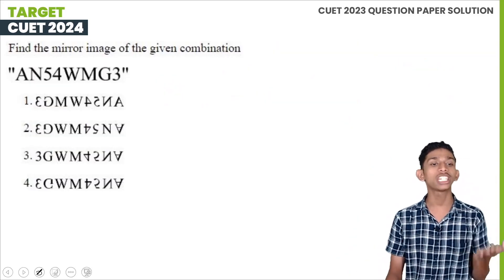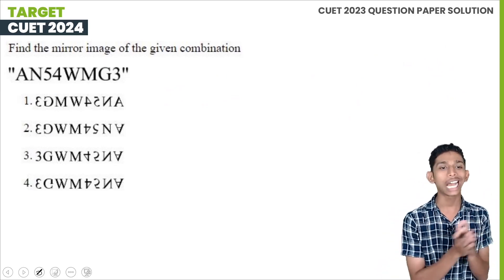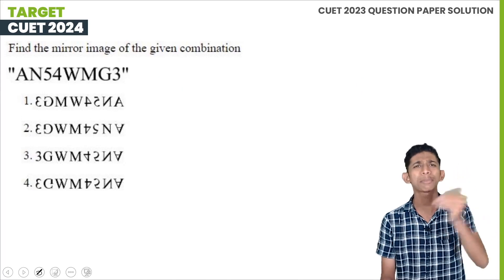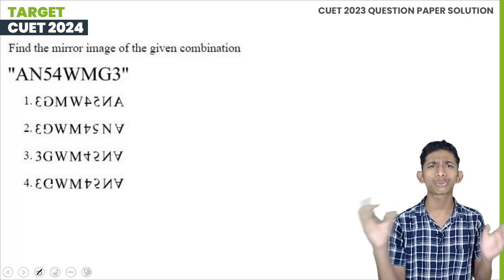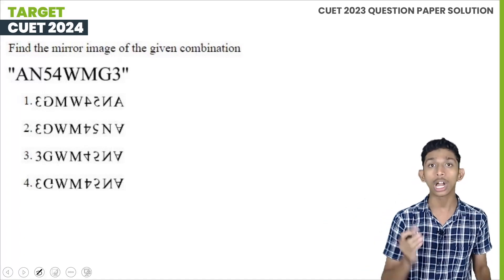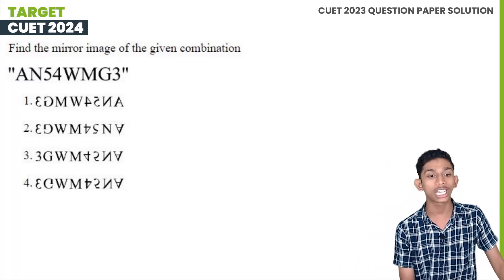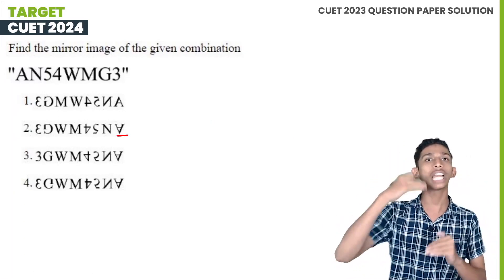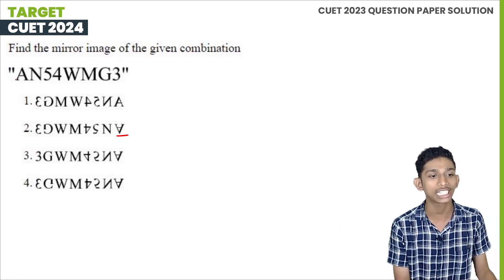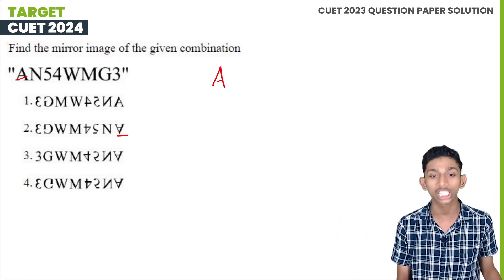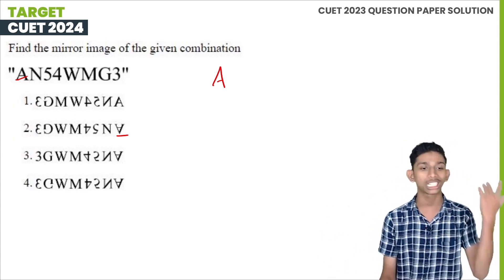The next question is: find the mirror image of the given combination. The mirror image is the second concept here. In a mirror image, left and right are swapped. If you have the right side, the mirror image will show the left side. You have to identify the correct left-to-right reversed option among the given choices.